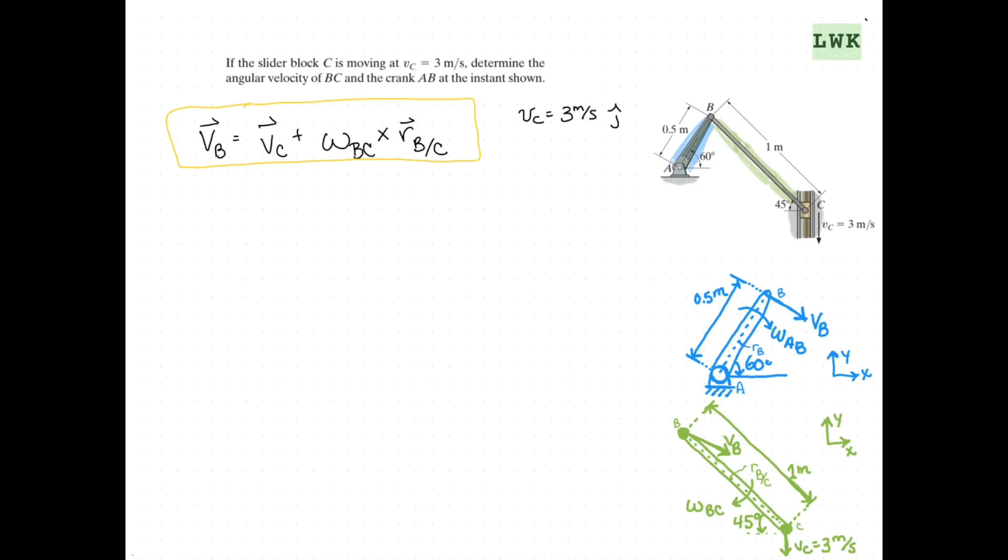Vb is going to be a little more complicated. We're going to use what we know about our rotation to say that Vb can be written as omega AB cross RB. So let's plug that in. We'll say negative omega AB K cross 0.5 cosine of 60 degrees I plus 0.5 sine of 60 degrees J.